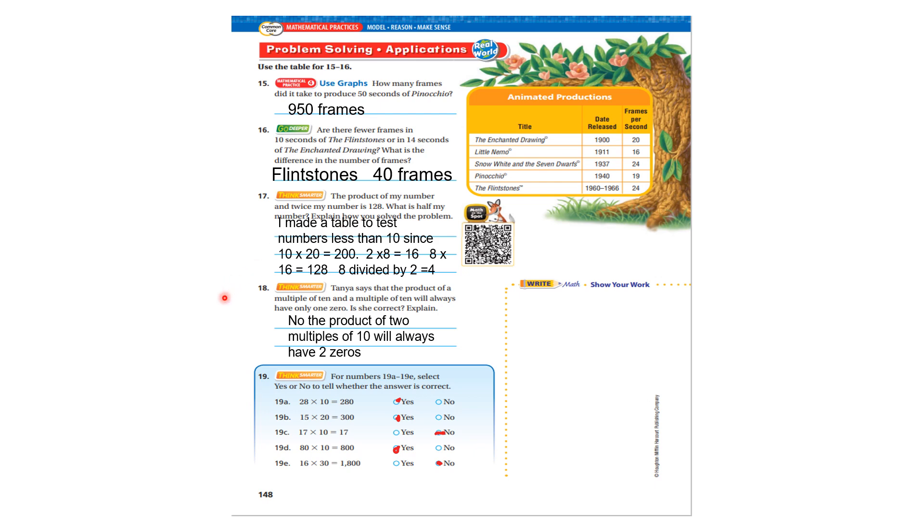Number eighteen, Tanya says that the product of a multiple of ten and a multiple of ten will always have one zero. Is she correct? No, the product of two multiples of ten will always have two zeroes. Down here we have yes, yes, no, yes, no. If you got any of these incorrect, it's because you didn't multiply these out correctly.